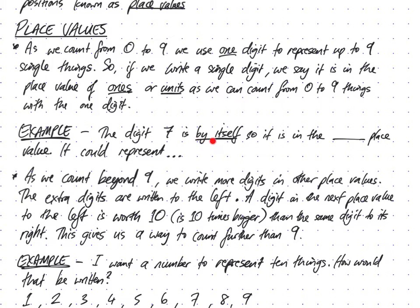For example, the digit 7 by itself must be in the units or ones place. I'll put 'ones' in brackets here. It could represent - I can't show you fruit, so I'll do dots instead. That 7 could represent 1, 2, 3, 4, 5, 6, 7 dots. That's all fine because I've only got 7 of those things and I've got a symbol between 0 and 9 to represent that.